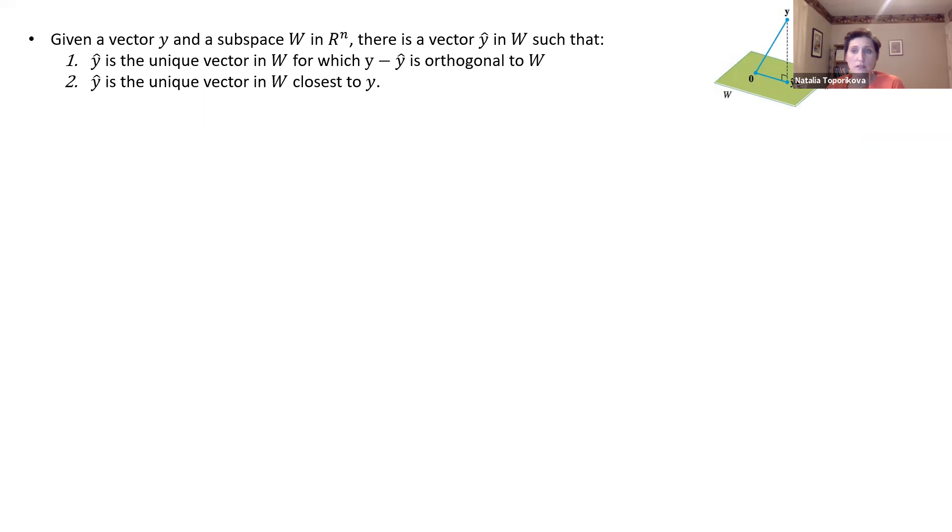Before, we were talking about projections, and we discovered that for every subspace W of R^n and any given vector y, we can find projection y-hat of our vector y on the subspace W. And that projection is unique, and it's actually the closest vector in the subspace W to the vector y.